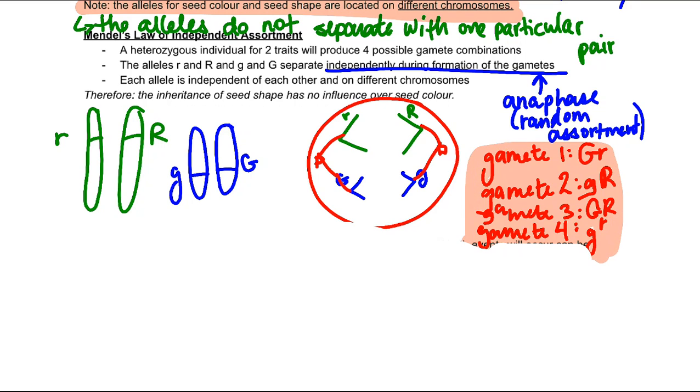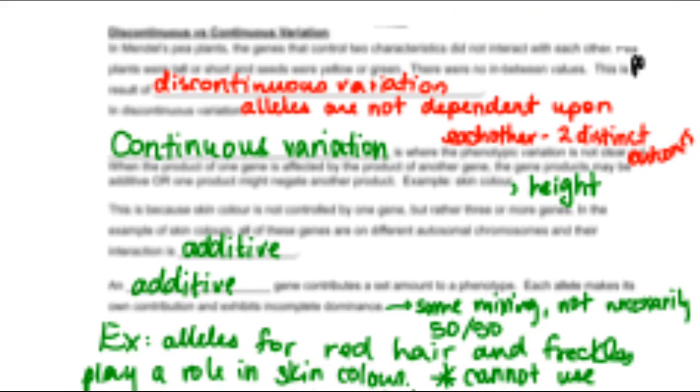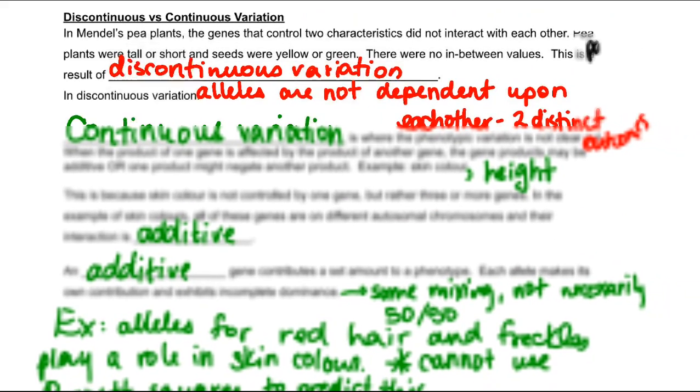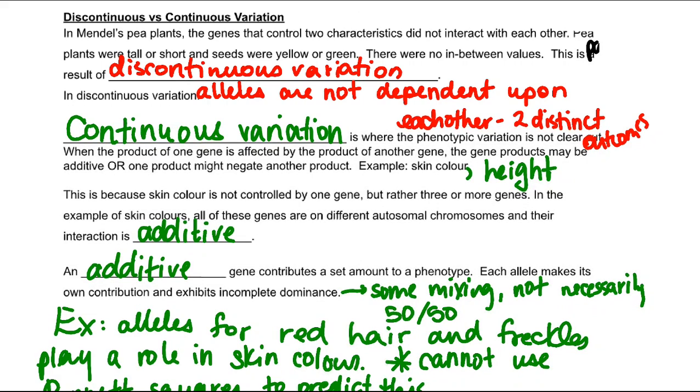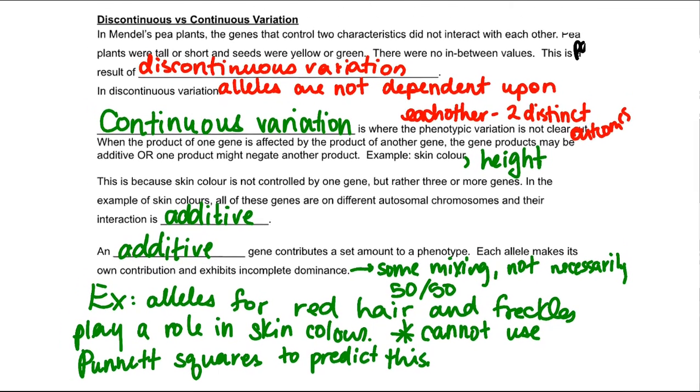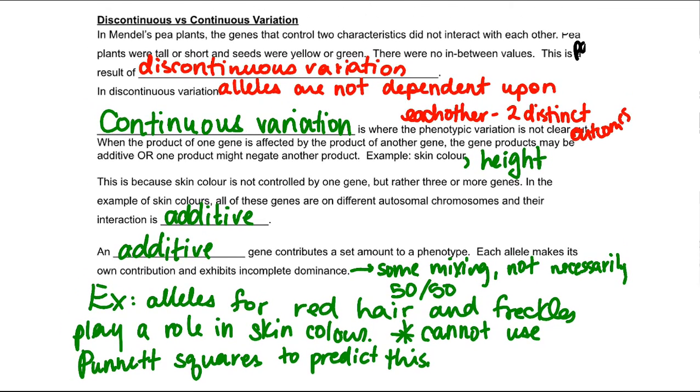The next thing I wanted to talk to you about in the same vein of that idea is the idea of discontinuous versus continuous variation. This is a bit of a longer one but again this is the key highlight from this lesson and it's a very important concept not only to our unit but to genetics and biology as a whole.